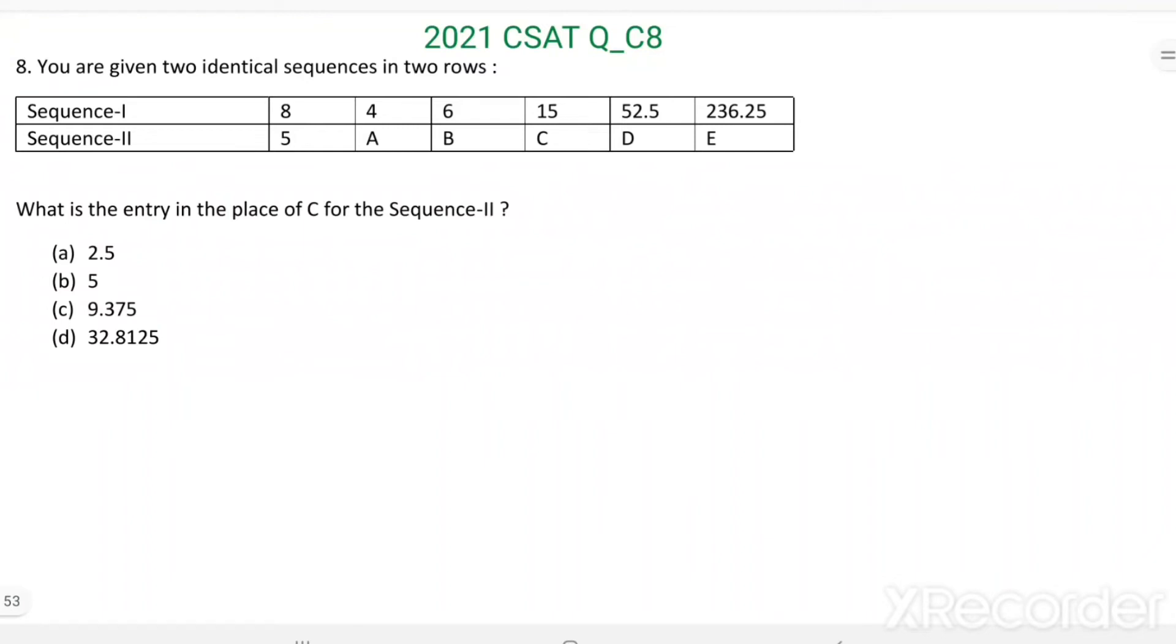Question number 8. You are given two identical sequences in two rows, Sequence 1 and Sequence 2. What is the entry in the place of C for Sequence 2?